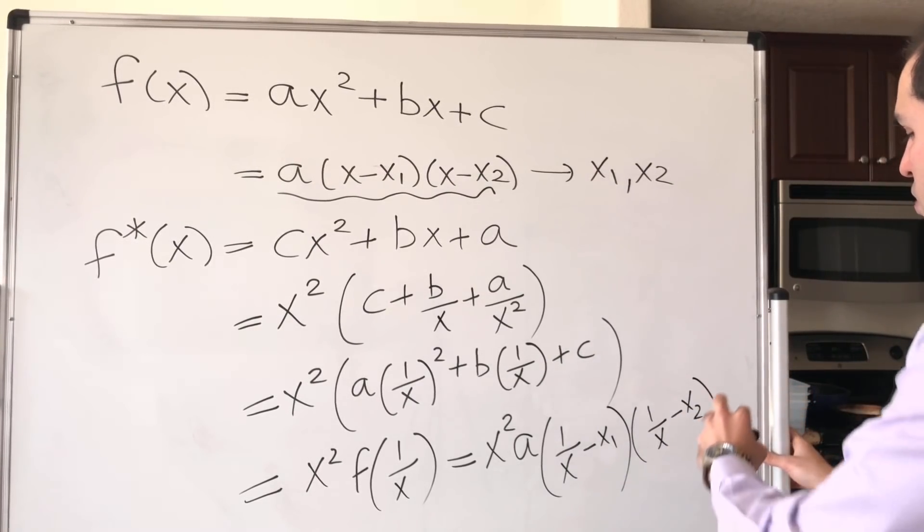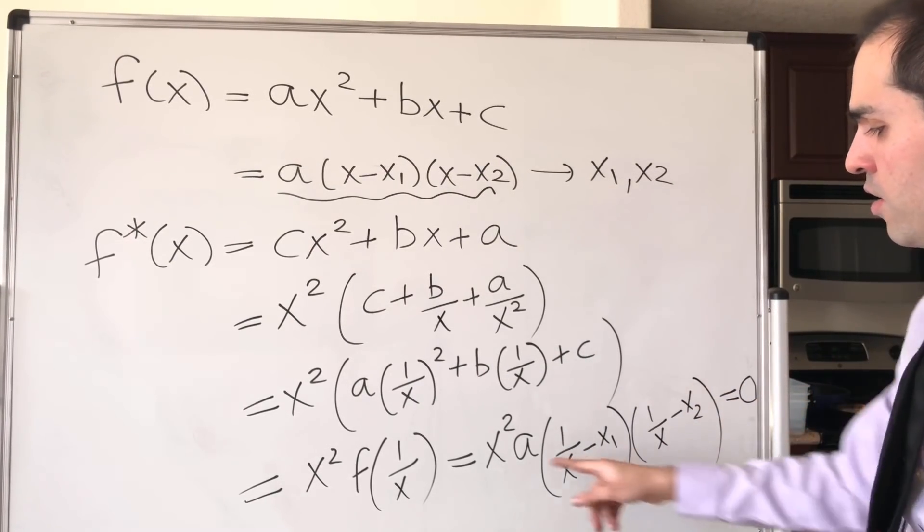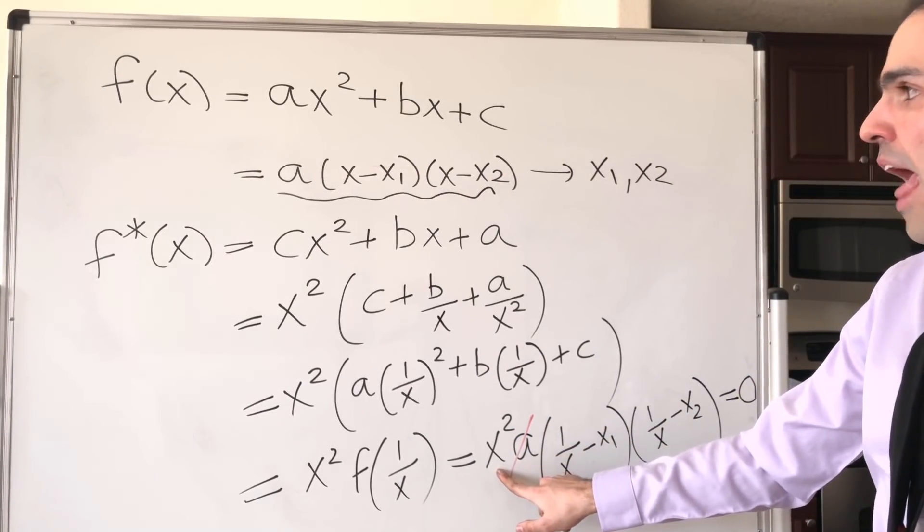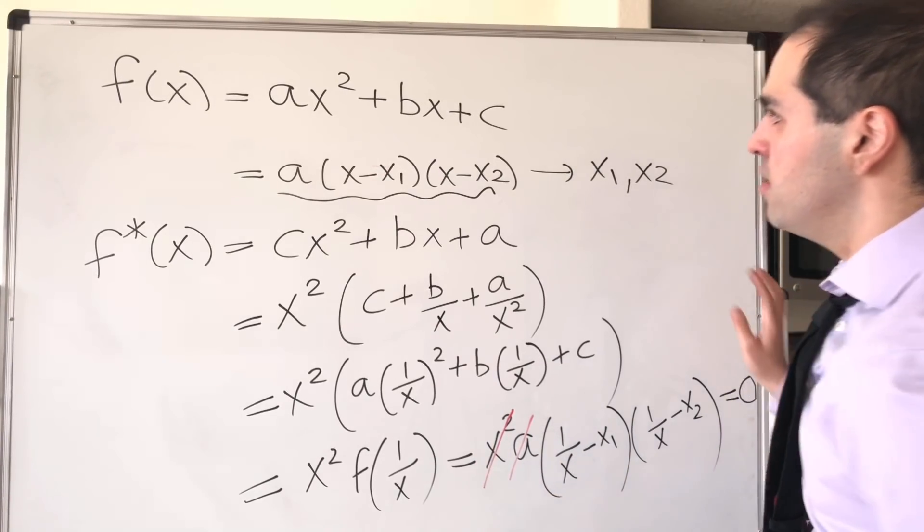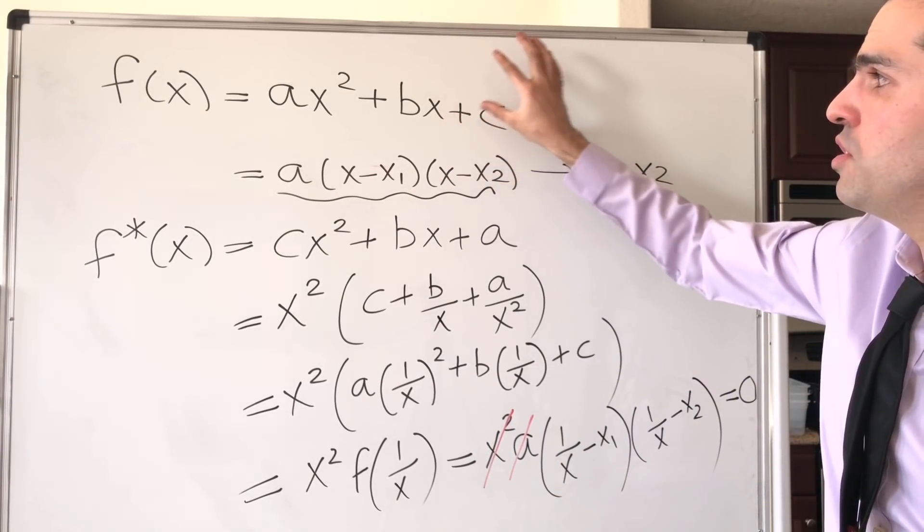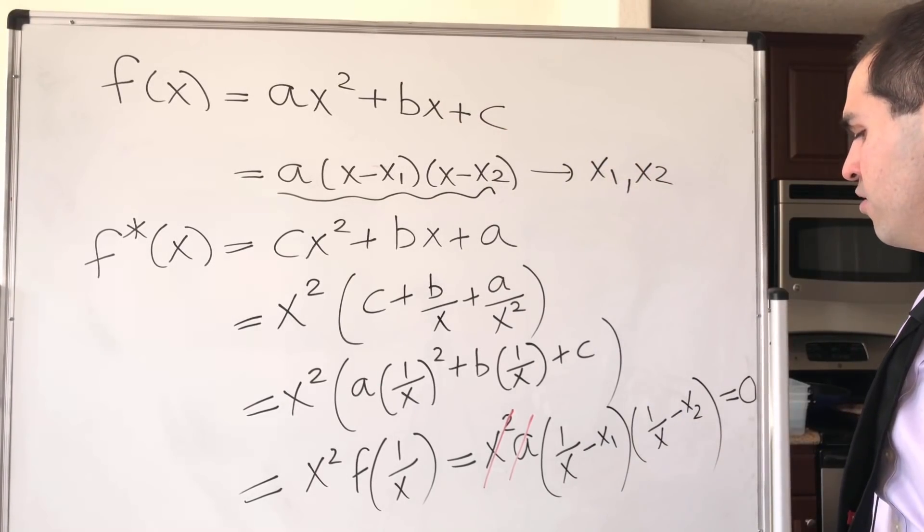And suppose we want to set it equal zero. So again, by assumption a is non-zero, but also x is non-zero because we assume that c is non-zero. So plugging in x equals zero wouldn't give you a zero for sure.